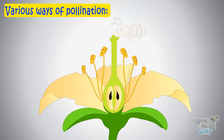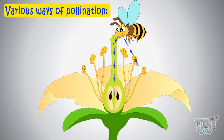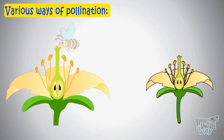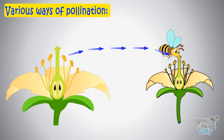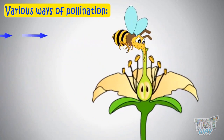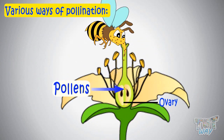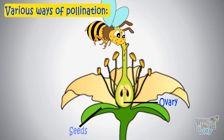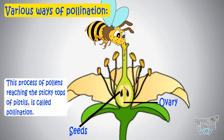While visiting flowers for nectar, the pollens from the anther get attached to the body of the insects. And when these insects visit some other flower for nectar, pollens get to the sticky top of the pistil, reach the ovules where fertilization occurs, leading to the formation of seeds. This process of pollens reaching the sticky tops of pistils is called pollination.